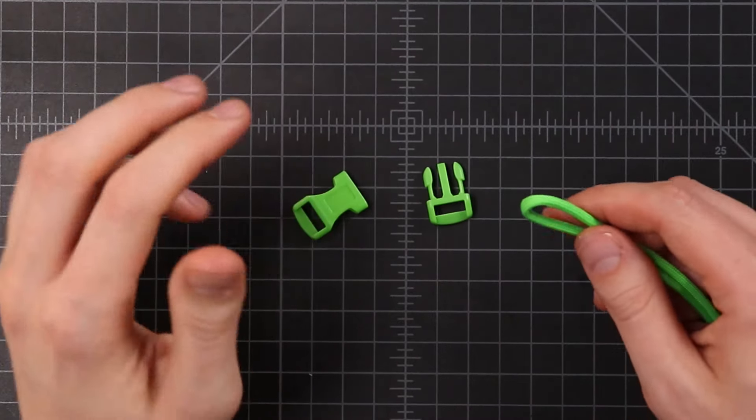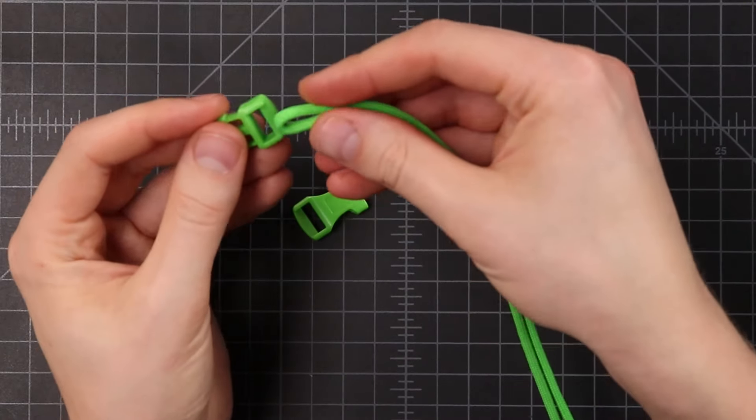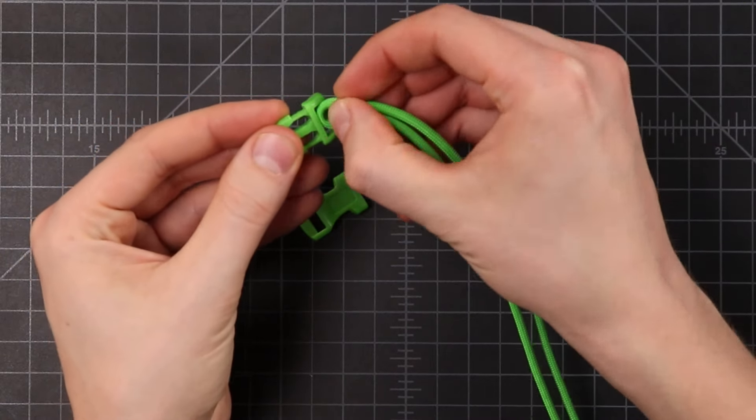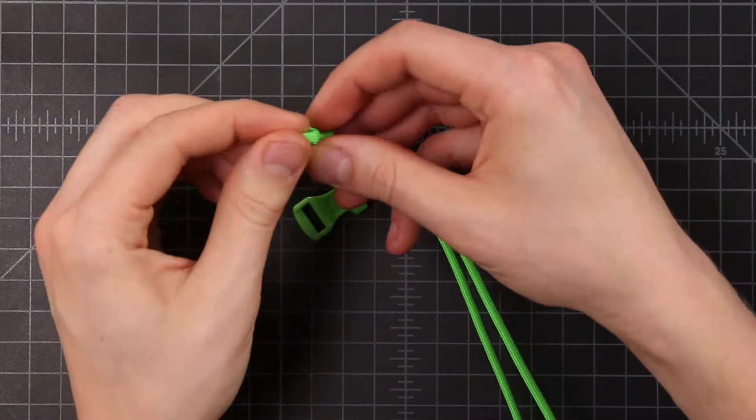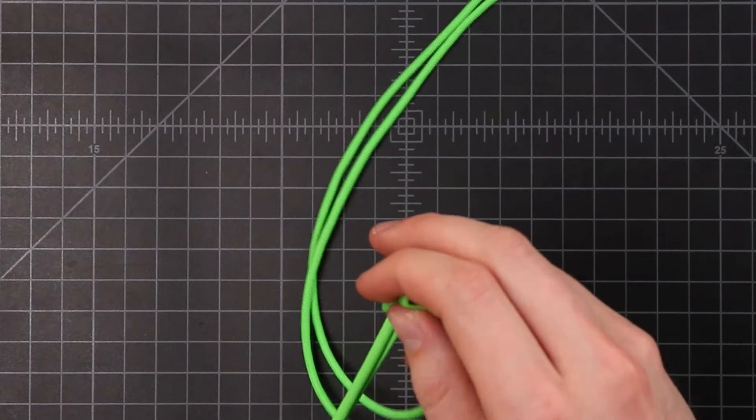So what I like about this pattern is that it has this nice neon river running down the middle of it. So whatever color you want that to be, start with that one, and we're going to fold it in half, and put that bend through our buckle with the usual cow hitch, like that, and then bring the other two ends back to the other end of the buckle, and put those down through. You guys know the drill by now.